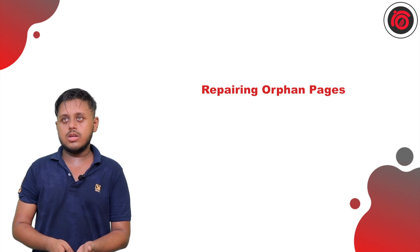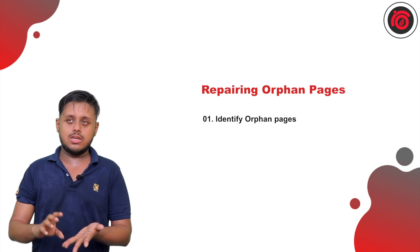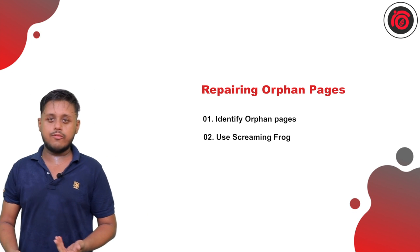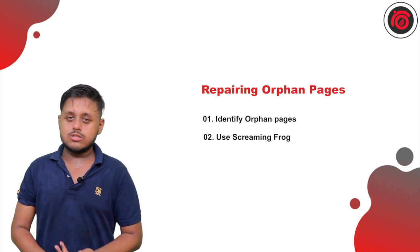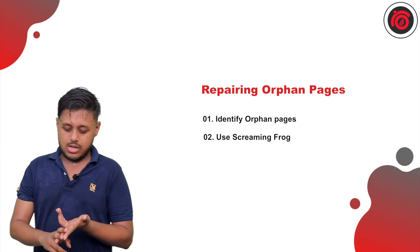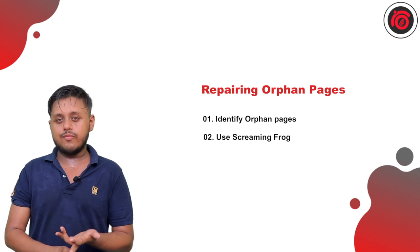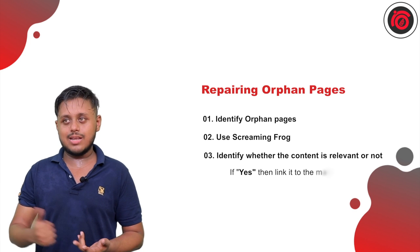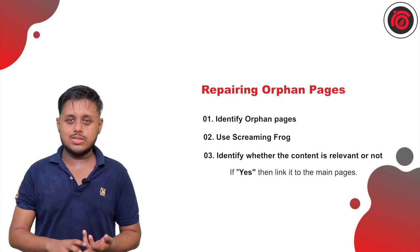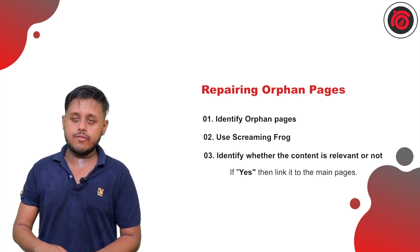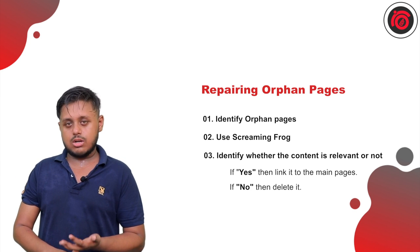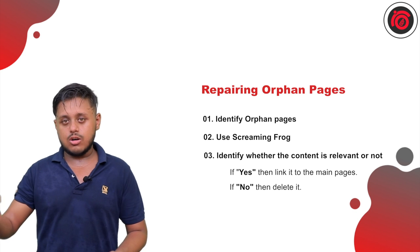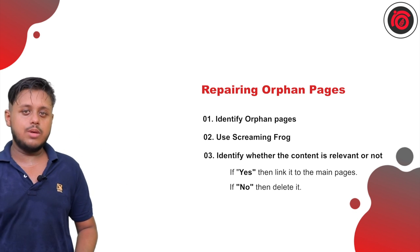So how do you fix orphan pages? First, you need to identify them — there are tools in the SEO industry you can use. Screaming Frog is the best of them. If you know how to run a Screaming Frog crawl, you probably know how to identify orphan pages. In order to fix orphan pages, you have to understand whether that content is relevant to you or not. If the content is relevant, you can link it to one of your main pages, specifically the category pages of your navigation. Otherwise, if the content is not at all relevant, you can either delete the pages, remove them through Google Search Console, or include them in the robots.txt file.